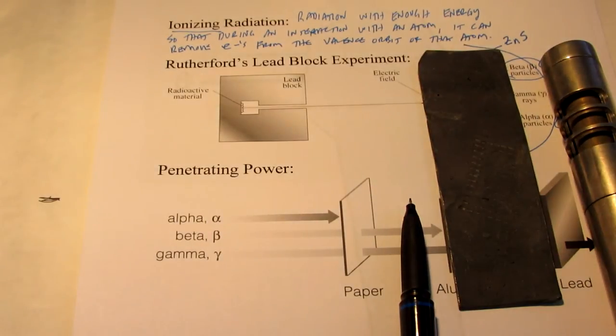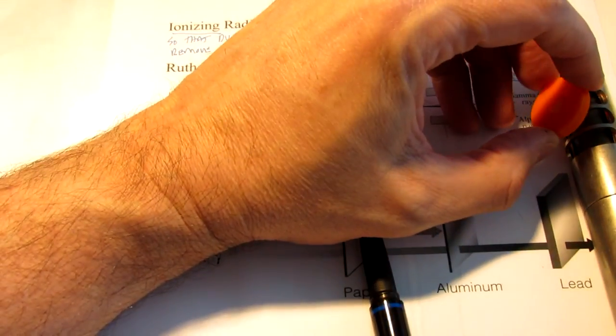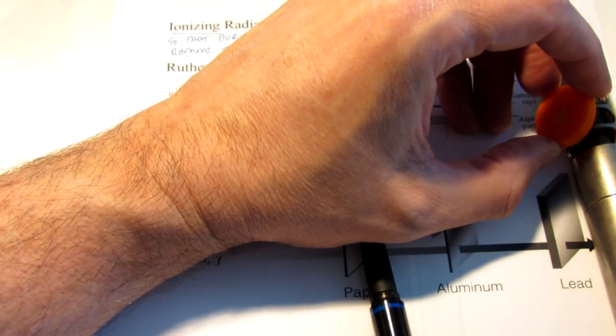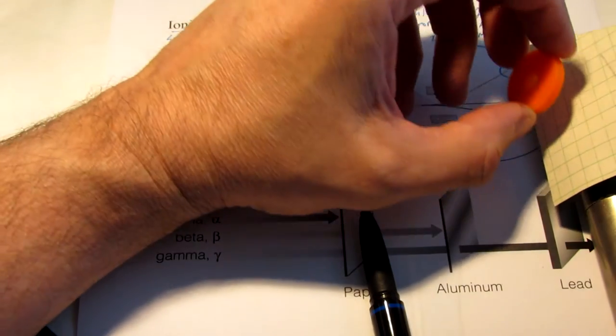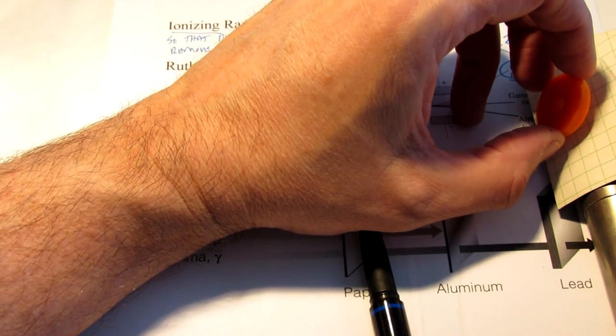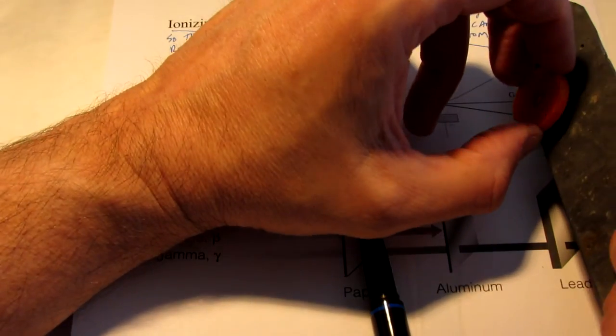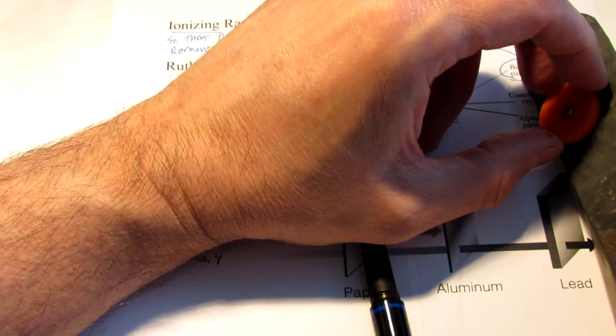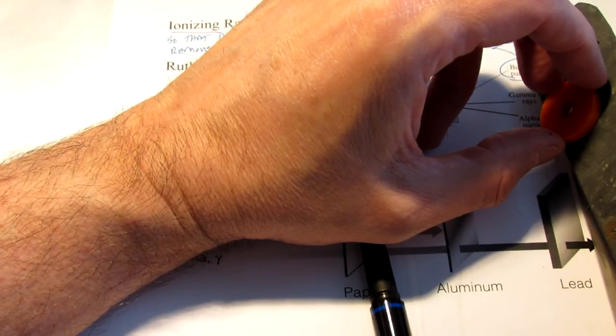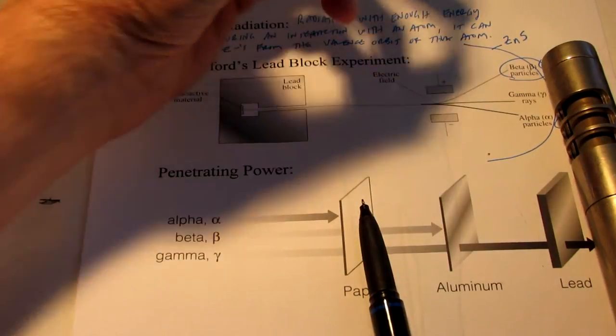Now let's put the beta away and let's pull out gamma this time. So here's my gamma source, and we're going to do the same thing. Gamma is not quite as intense as my beta. We'll put that there, and we'll put a piece of paper between the source. And you can see the paper does not stop that. Let's try the same thing with lead, and you'll see that the lead doesn't stop it either.